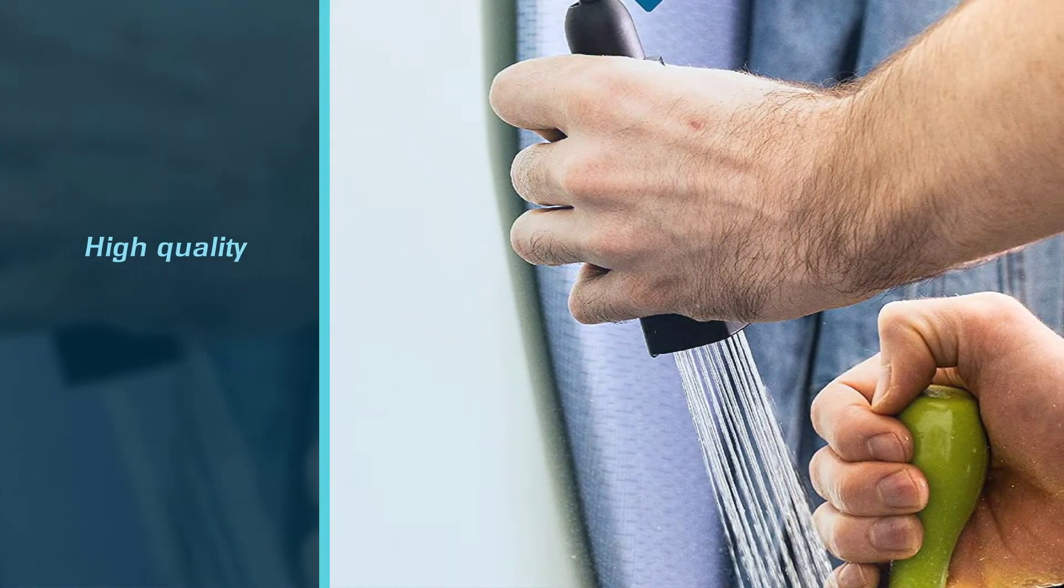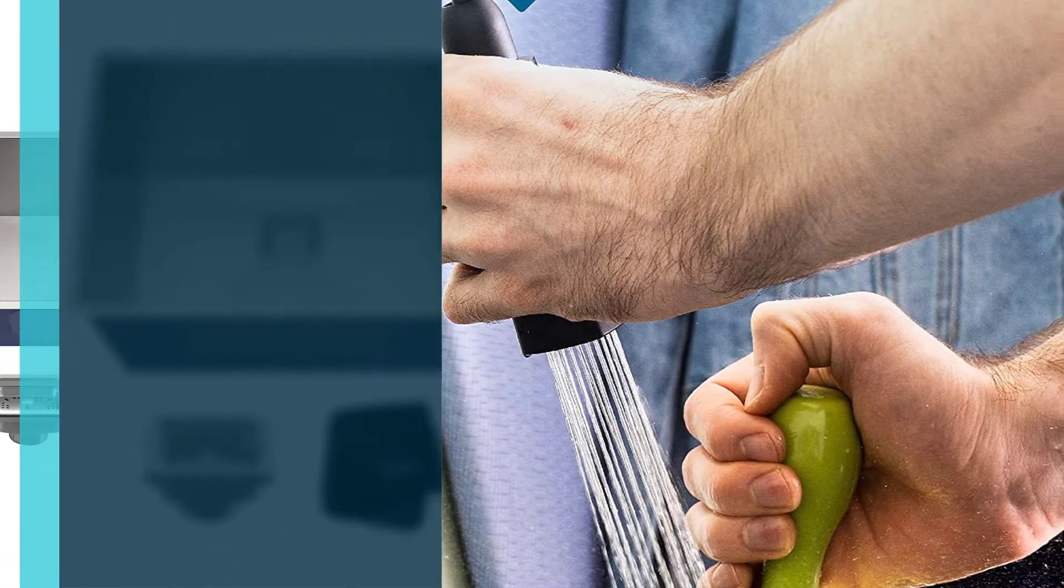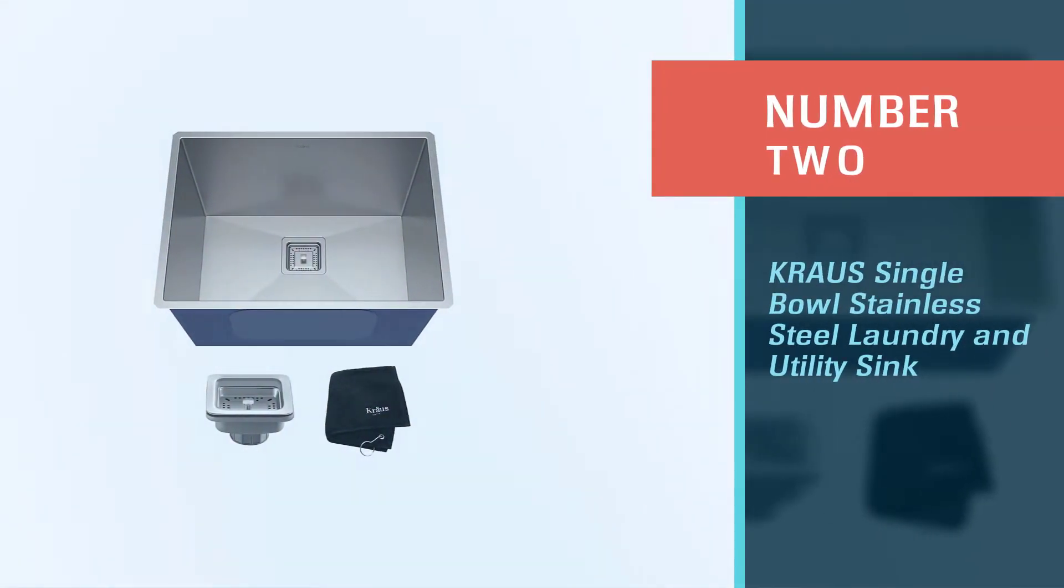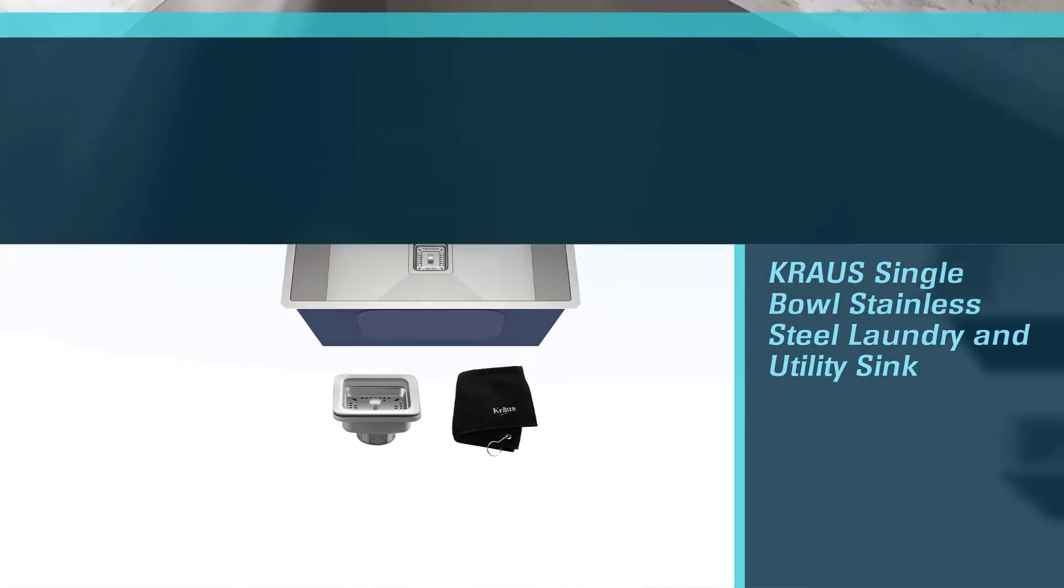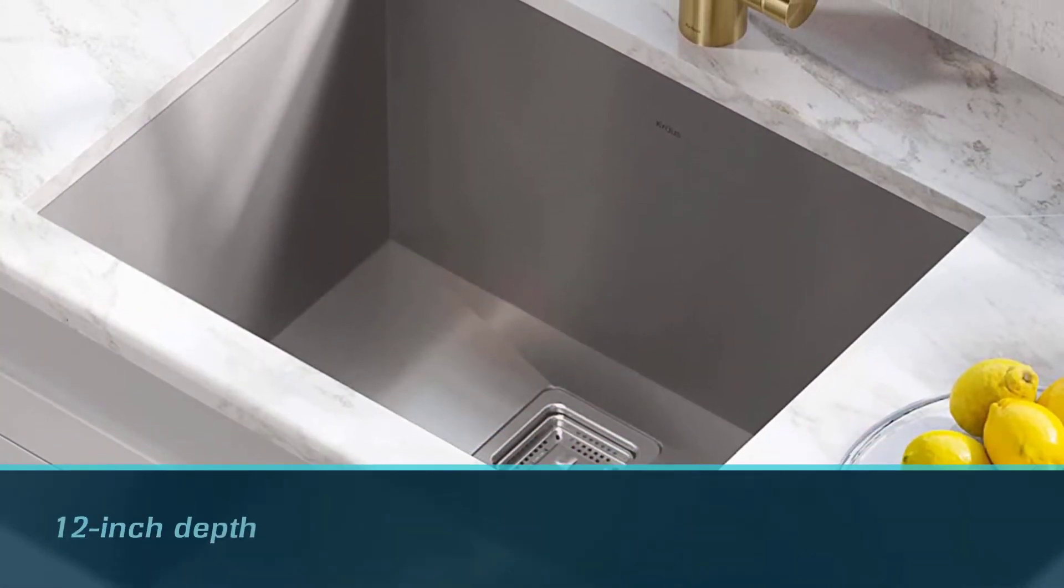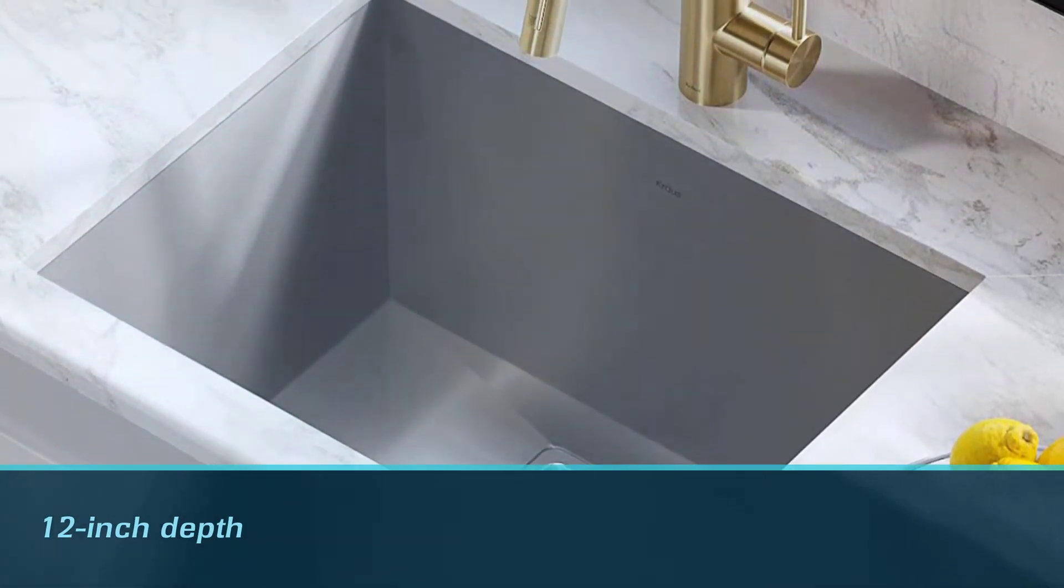Number two: Cross Single Bowl Stainless Steel Laundry and Utility Sink. With its large dimensions and 12-inch depth, the stainless steel sink is ideal for upscale laundry rooms that feature solid granite, quartz, or stone countertops.